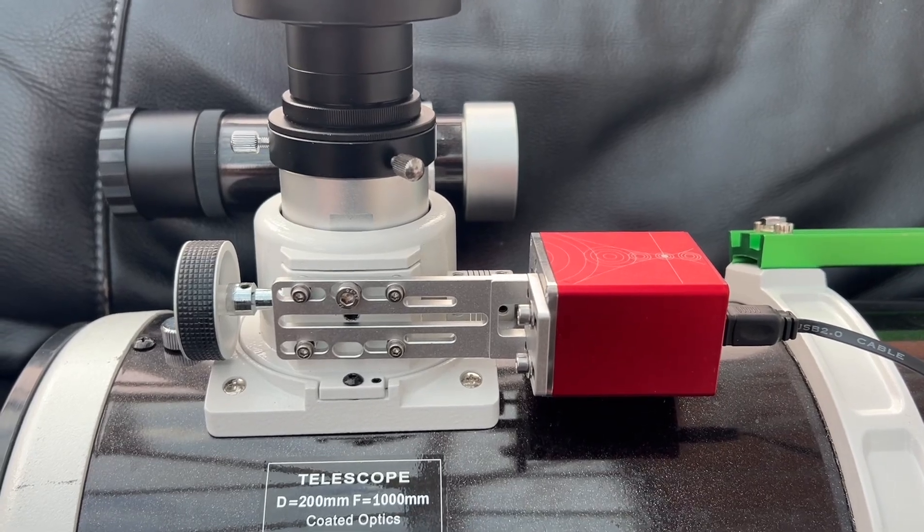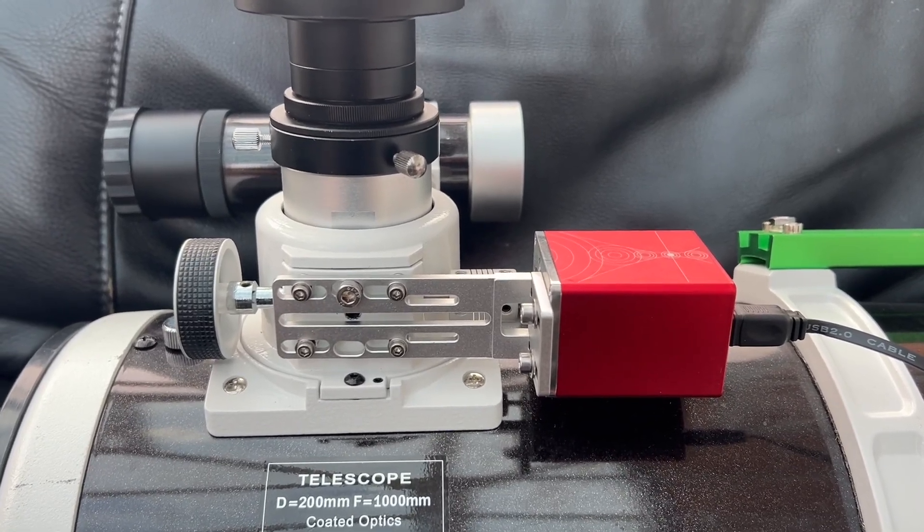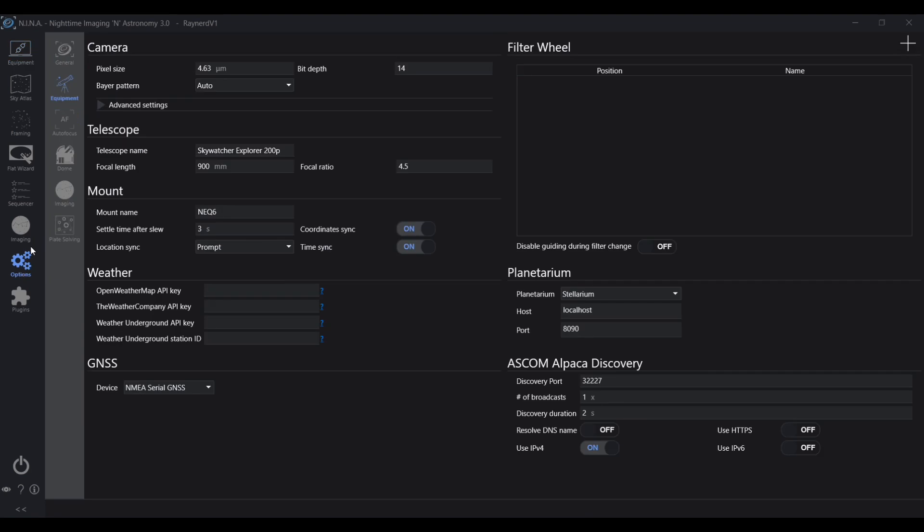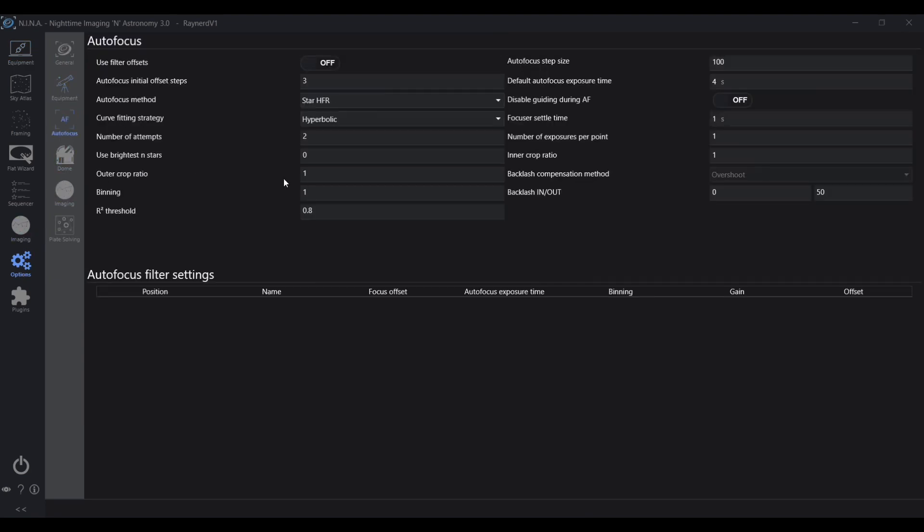So I'm in NINA now, and I've installed the ZWO EAF ASCOM drivers and connected the focuser. I got two instances—Focuser 1 and Focuser 2—but I left Focuser 1. That seemed to connect absolutely fine. I went to settings and then the autofocus settings, and I left most of the default settings there. The only thing I changed was this initial offset steps from four to three, but that was when I'd actually got it somewhere close. So I'd leave that at four.